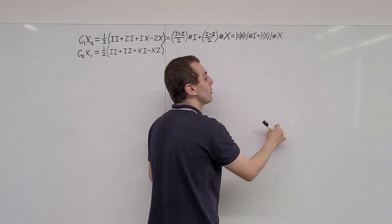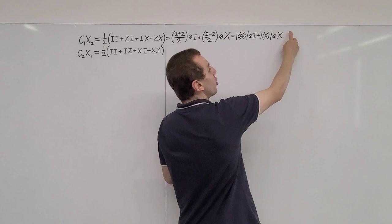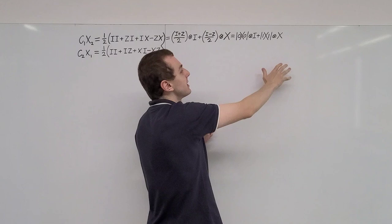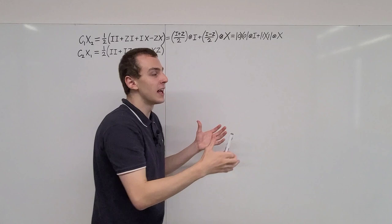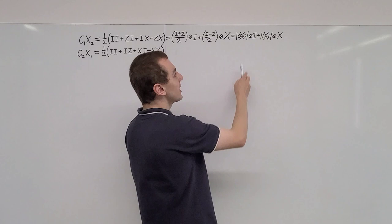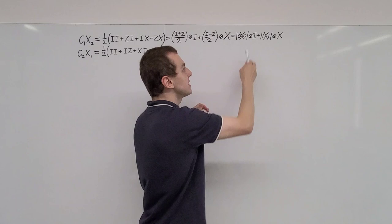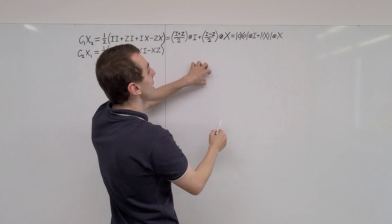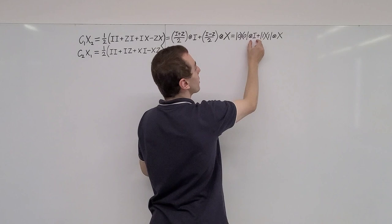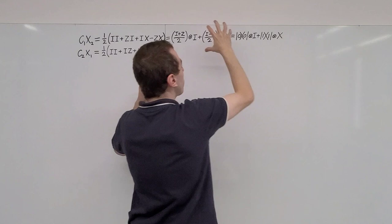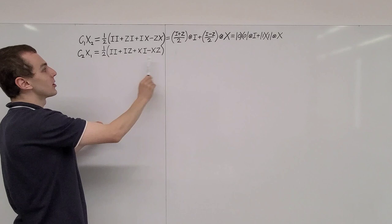I and X can also be written in Dirac notation as sums of ket-bra combinations. A ket followed by a bra constructs an operator — specifically a matrix. This corresponds to the top-left entry in a 2×2 matrix. We're taking a 2×2 matrix in tensor product with another 2×2 matrix, constructing a 4×4 matrix. So all the objects being added here are 4×4 matrices.